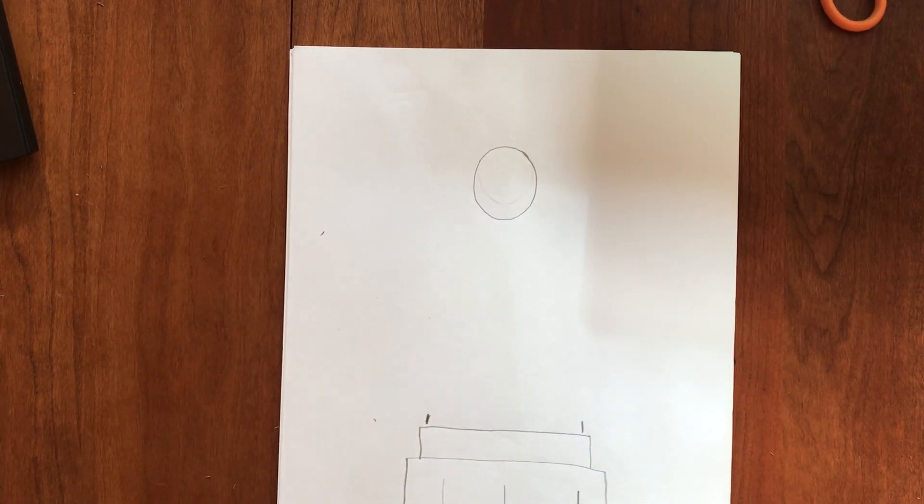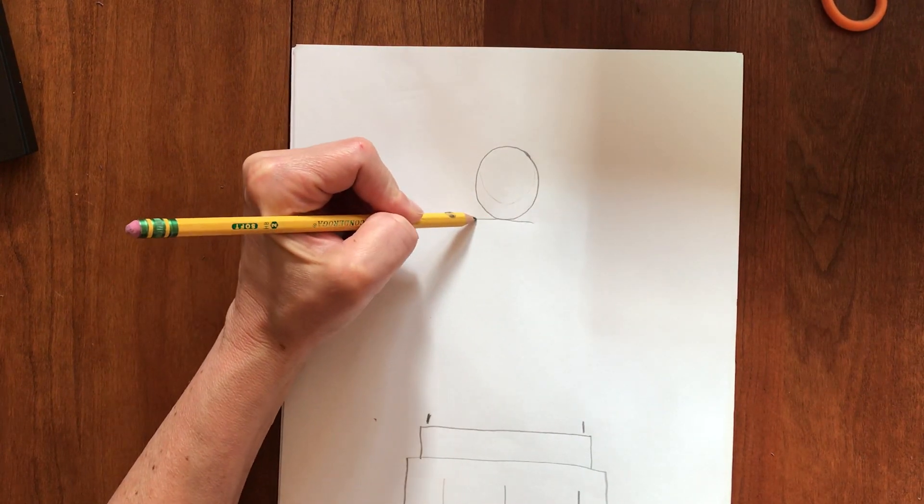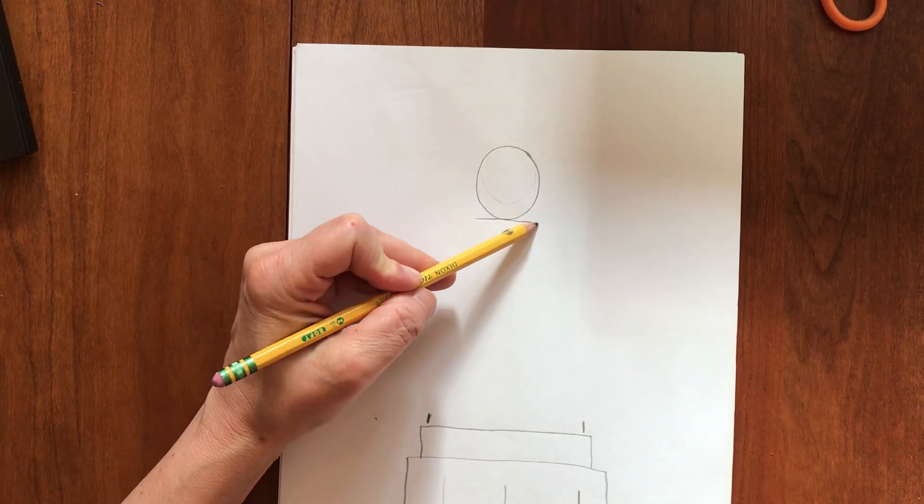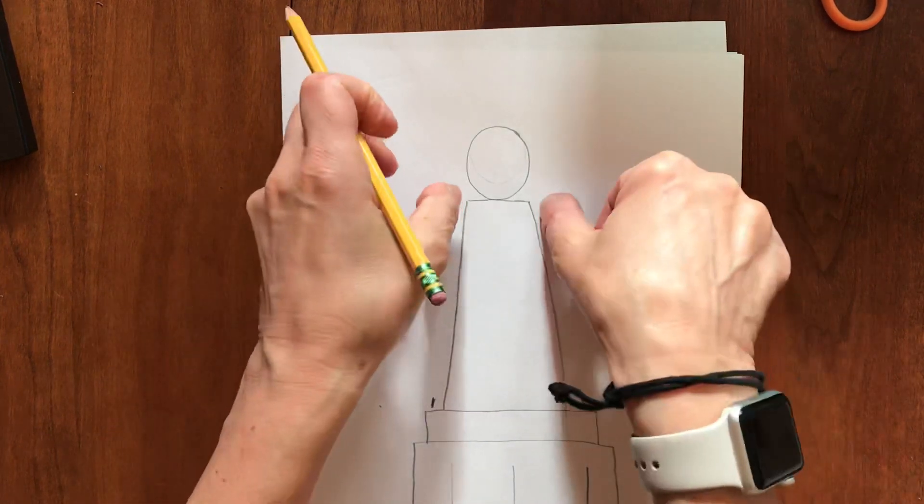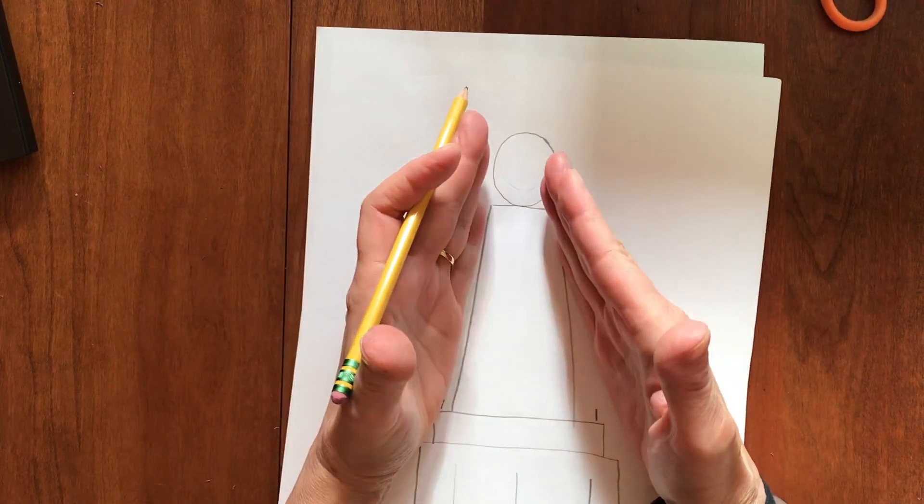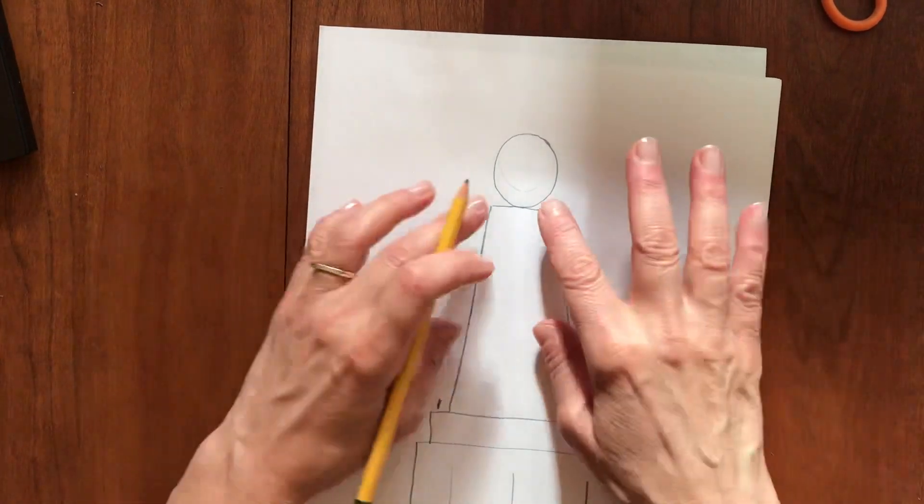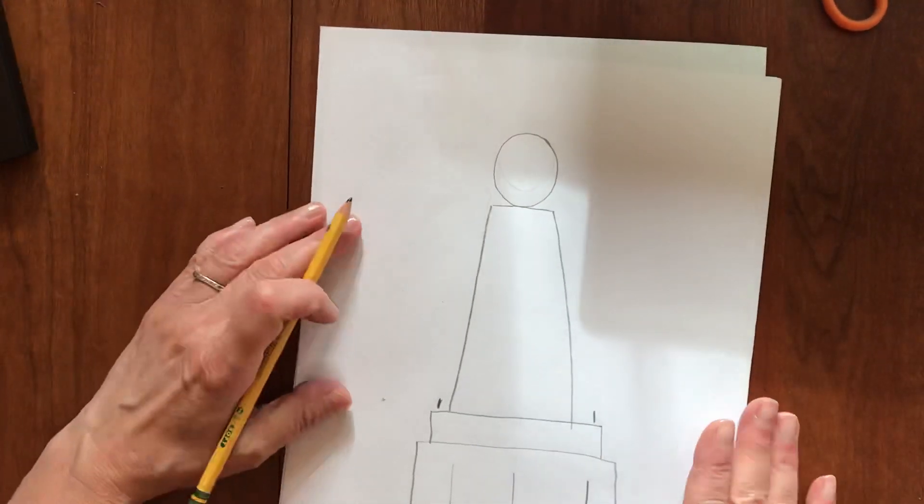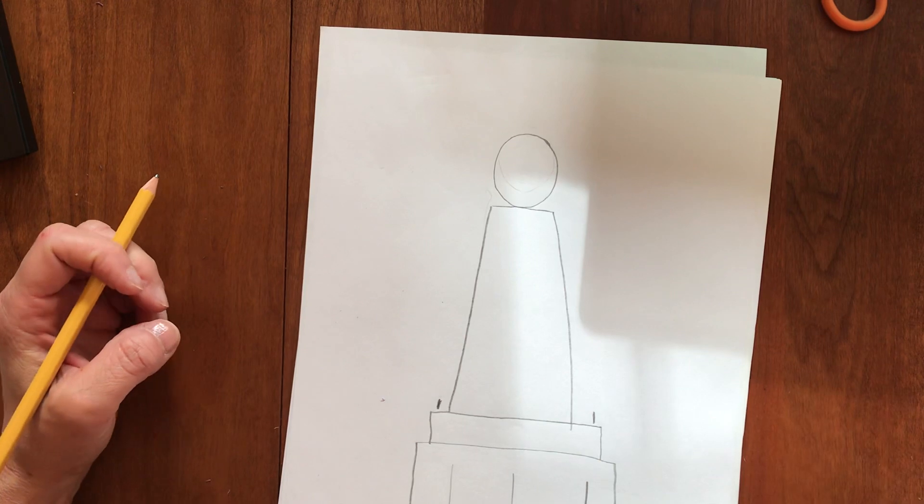When you make the lines coming down, they come out a little bit, but it's going to be a robe so it's really not going to be that straight later. That's why you don't worry about how straight it is. Obviously, the next thing we will do is show the arms.